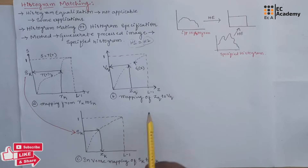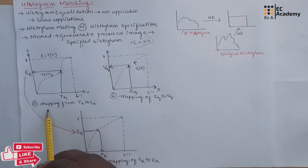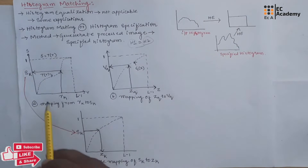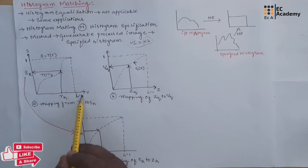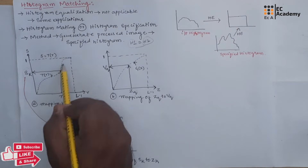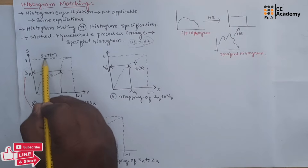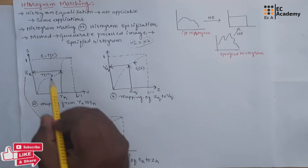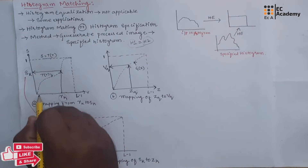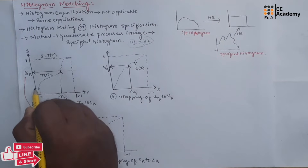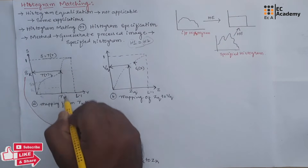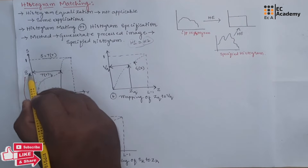This figure shows how Histogram Matching can be achieved. The mapping is done from R(k) to S(k). On the x-axis we have the input image pixels and on the y-axis we have output image pixels. This is the transfer function based on the equation S = T(R). Here we are matching R(k) with S(k) — R1 is matched with S1, R2 is matched with S2, and so on, until pixel Rk is matched with Sk.